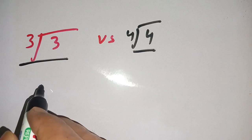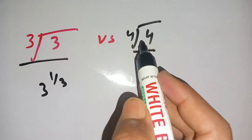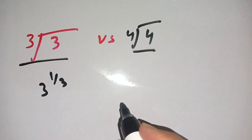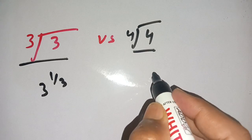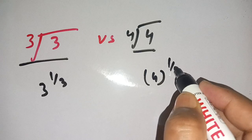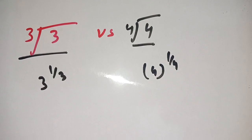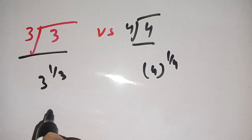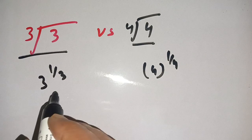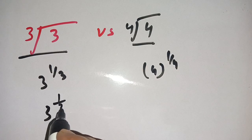We can write the cube root of three as three to the power of one divided by three, and the fourth root of four can be written as four to the power of one divided by four.